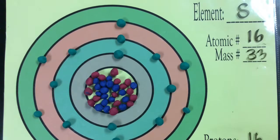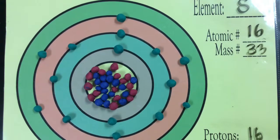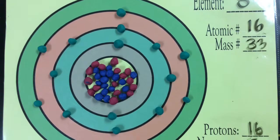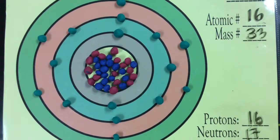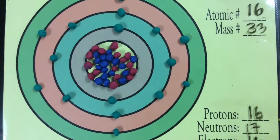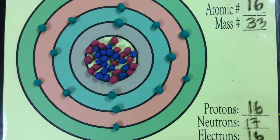For example, here is sulfur-33, an isotope. The key difference here is that sulfur-33 has 17 neutrons as opposed to 16 protons, which bumps up its atomic mass to 33 as opposed to 32.